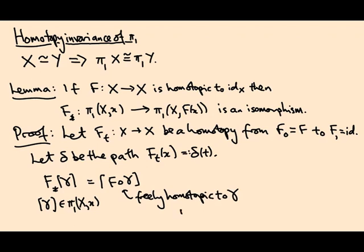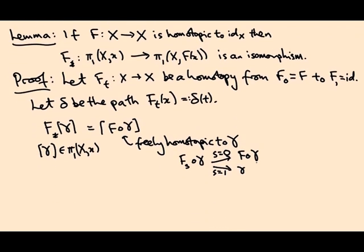Well, here's a free homotopy. That's a path of loops starting at t=0 with f∘γ—maybe I should call this s rather than t—so at s=0 I get f∘γ which is this loop here, and at s=1 I get the identity composed with γ which is γ. So this is a homotopy from f∘γ to γ, but it's a free homotopy because the base point moves along this path δ.